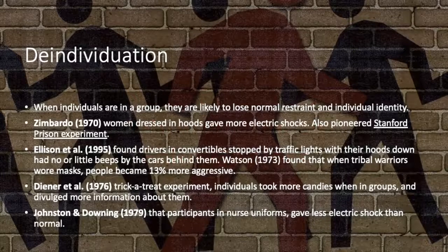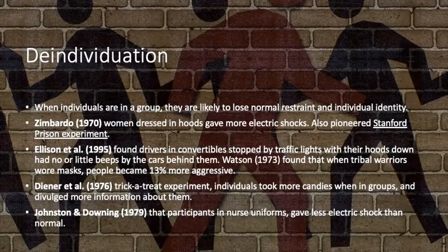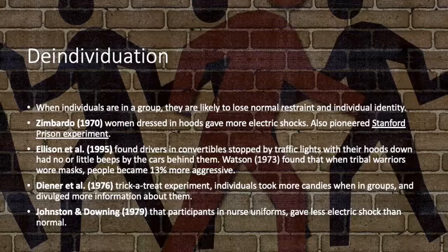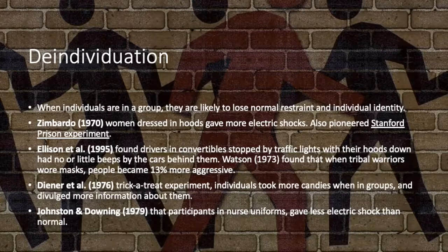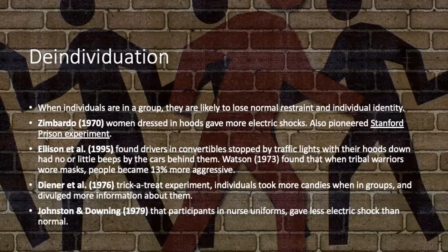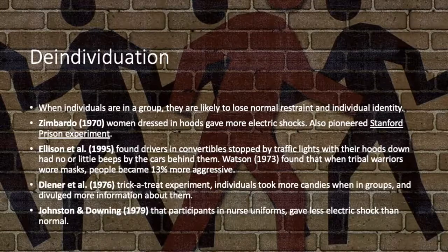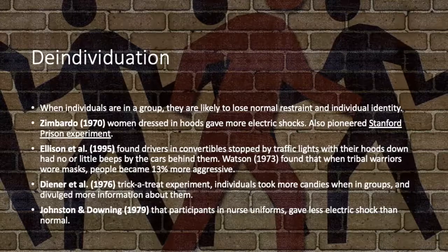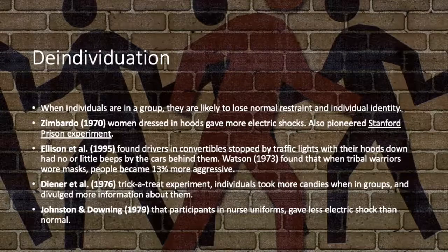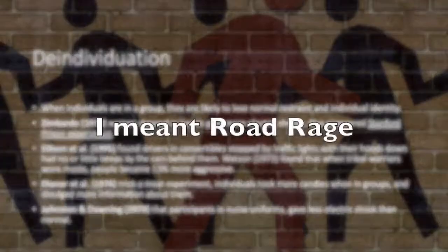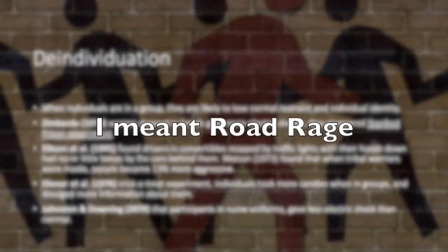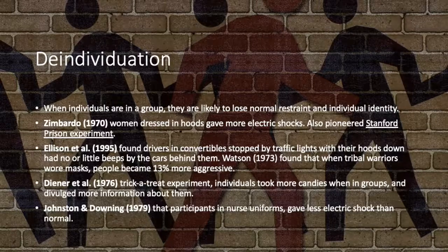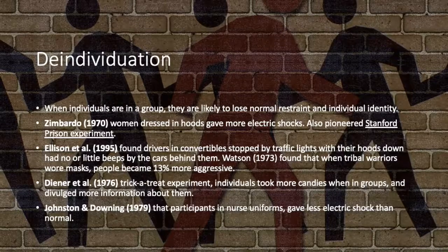Ellison et al in 1995 found that drivers in convertibles who stopped at traffic lights with their hoods down received no or little beeping from cars behind them, while convertibles with their tops up received longer beeps. This suggests that individuation occurred when individuals drove with tops down, and this can explain aggression while driving.